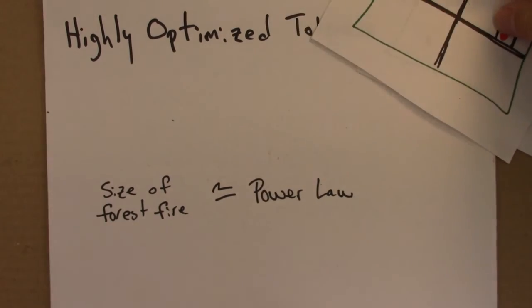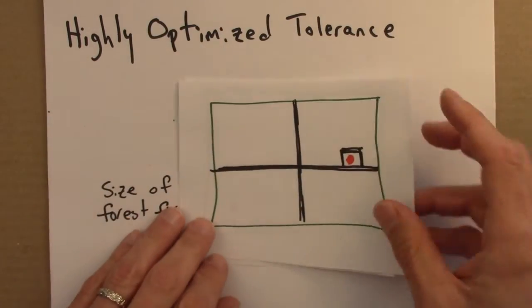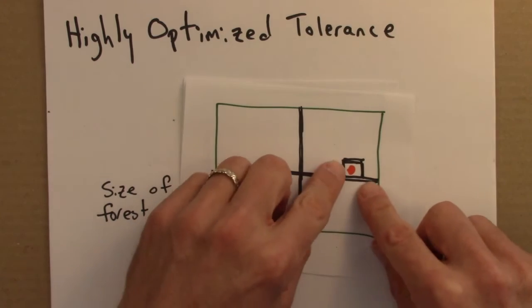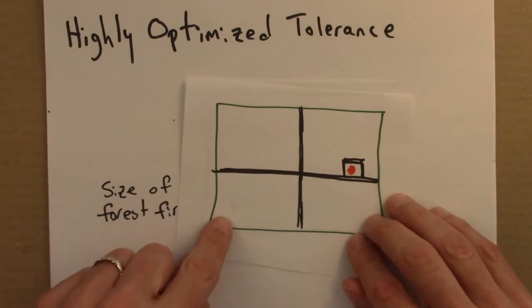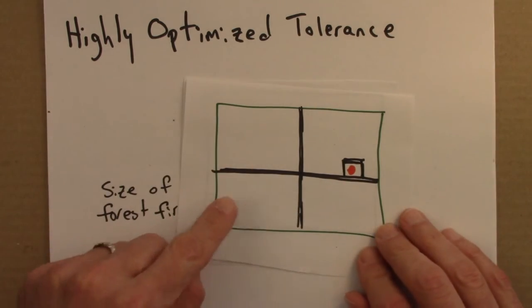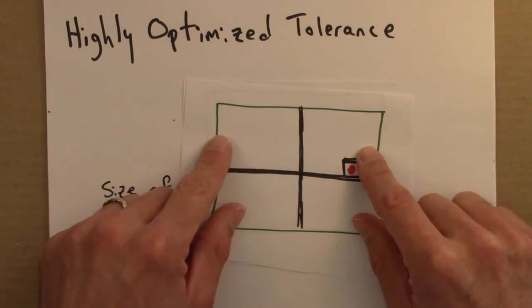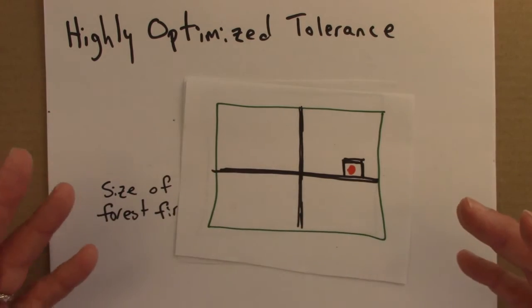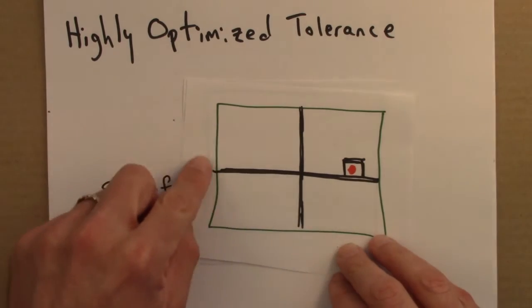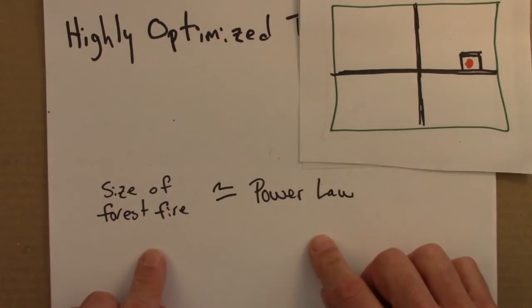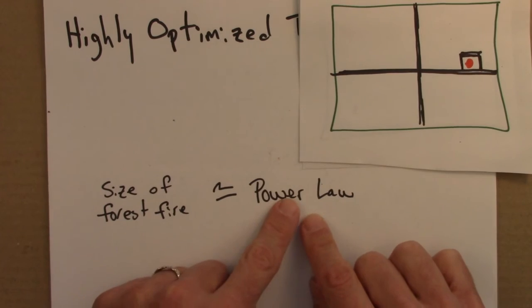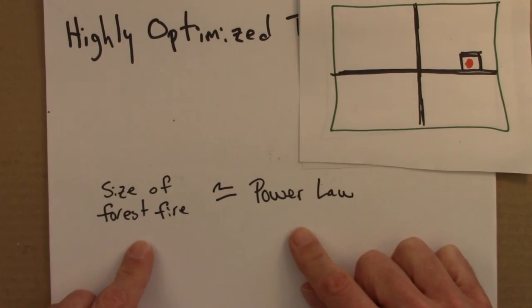So again, the picture is some sort of an optimization process, optimization under uncertainty. We have greater probabilities in some regions than others that there are going to be lightning strikes, and that then will lead to a power law distribution in the size of forest fires.